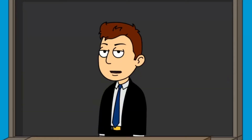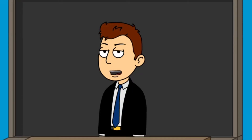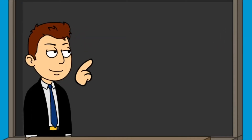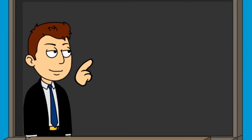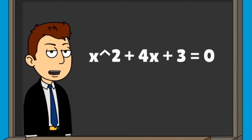Our lesson for today is about completing the square. I will show you a few example problems on the board and guide you through it. After that, I will give you a class worksheet. The equation here is x squared plus 4x plus 3 equals 0. First, you want to move the 3 to the right side. You will need to do the inverse and subtract 3.